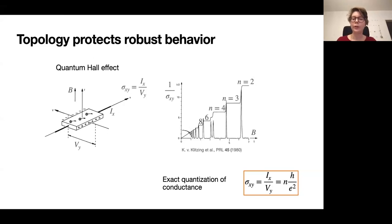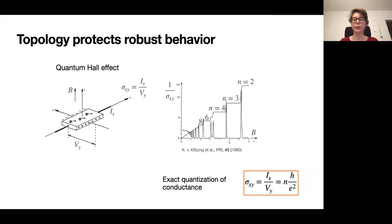Surprisingly, in the famous experiment by Klaus von Klitzing, the Hall conductivity is precisely quantized to certain values and keeps this value unchanged for a certain range of applied magnetic field. This is exactly a robust quantity that does not change when environmental conditions change. This robust value of conductivity can be attributed to an internal structure of the eigenmodes of the material, characterized by a topological invariant, which leads to eigenmodes localized on the edges.